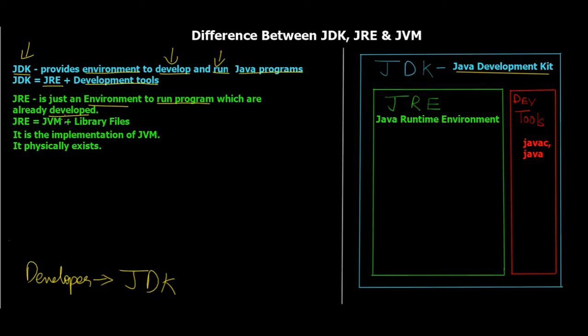From a client's perspective, he or she is not going to develop any program — they're just interested in the end result and want that executable program to run. For that, JRE is important. So a client is more interested in JRE, the Java Runtime Environment. JRE is basically JVM plus library files, and it is the implementation of JVM, which means it physically exists.